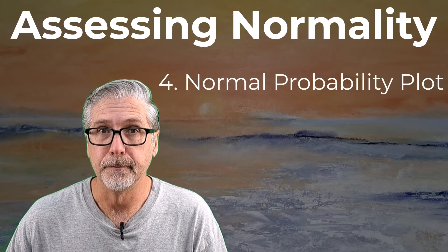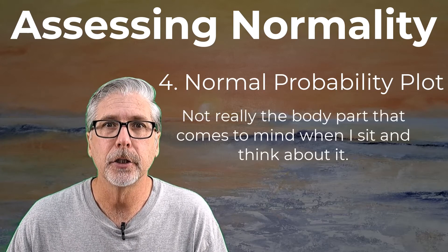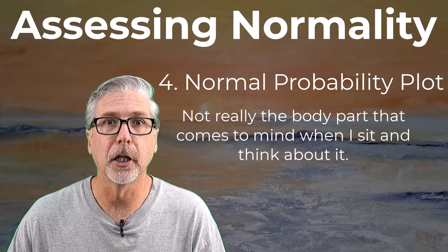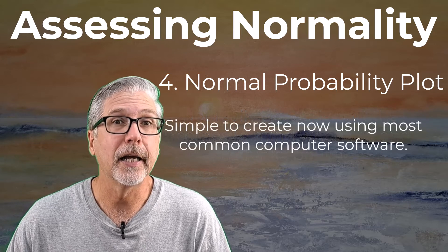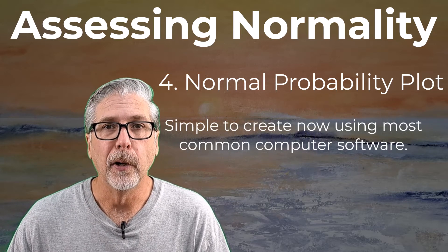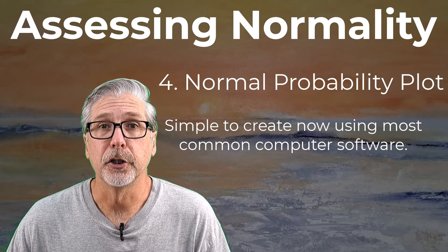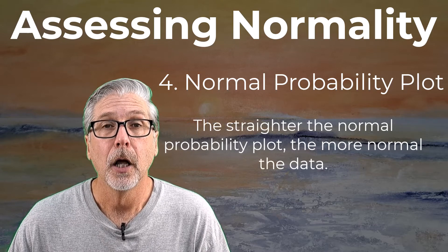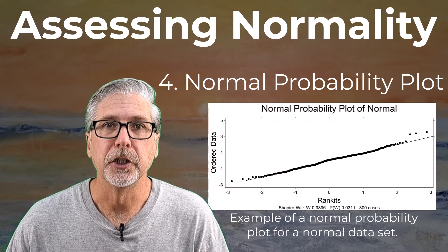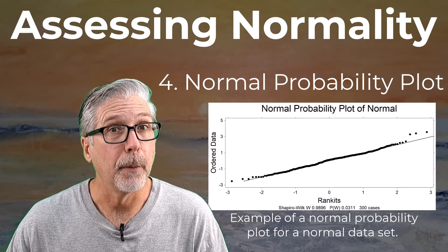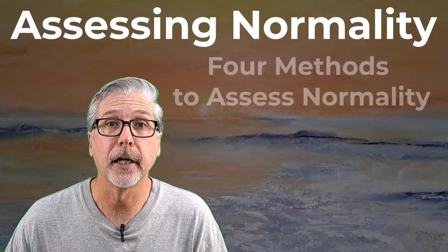Number four: the normal probability plot. Back in the day, these plots were a pain in the neck to draw — I still have nightmares about pulling out the logarithmic graph paper. Good news for you is that today it's simple. You point and click your way to creating a normal probability plot. Interpreting these plots is fairly straightforward as well: the straighter the plot, the more normal the data. How straight is straight? That's a good question, and one of the challenges with normal probability plots. But I promised you four, and I gave you four simple techniques to determine whether your data set is normal or not.